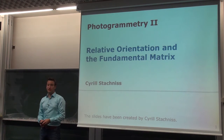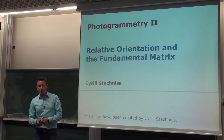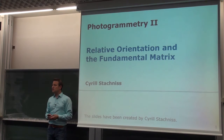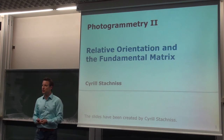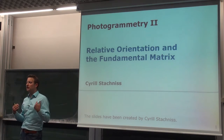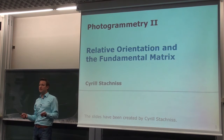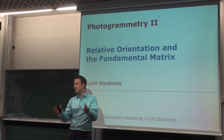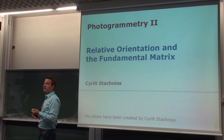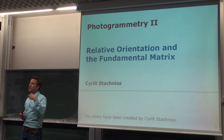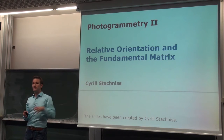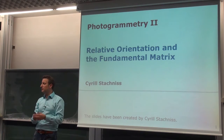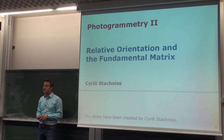We can switch directly to the first technical topic. What we want to look into is the geometry of the image pair. So we are now looking not into a single image, but into pairs of images — images taken from the same scene but typically from different locations. The question is: if we have those images, what can we say about the relative orientation of those cameras? Where is the second camera with respect to the first camera? Or what can we infer about the 3D geometry of the scene?